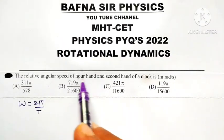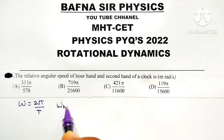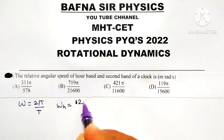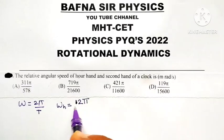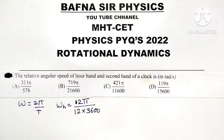As far as hour hand is concerned, it takes a time of 12 hours to complete one rotation, one revolution. So omega hour hand is equal to 2π divided by, now time period is 12 hours means 12 into 3600 seconds.